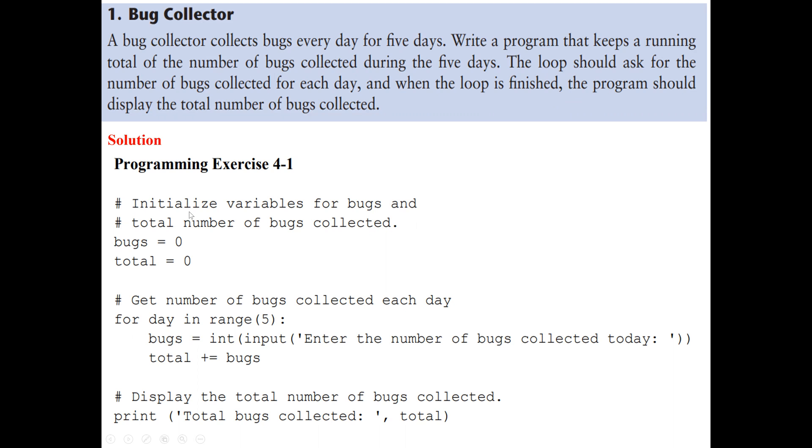So let's see the solution. First thing we do, we initialize our two variables. One variable for the bugs, where the user may enter the number of bugs for each day. Then the variable total, this is where we are going to store the total number of bugs entered for the five days. So next, we ask the user to enter the number of bugs collected for each day. Because it's five days, our range function, the argument, is five. So it is going to execute five times, from zero to four.